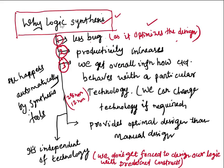Before the circuit is fabricated on silicon using some specific technology — like 20nm, 32nm, or 12nm — which is the last step of the VLSI design cycle, the logic synthesis step gives us overall information about how the circuit behaves with a particular technology. The technology can be 28nm, 12nm, 32nm, or 45nm, as per customer requirement.